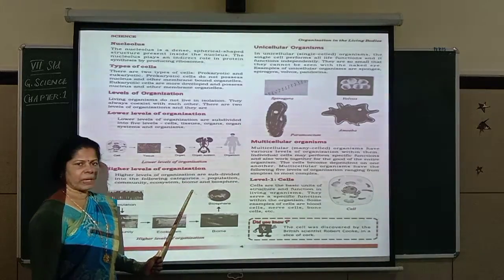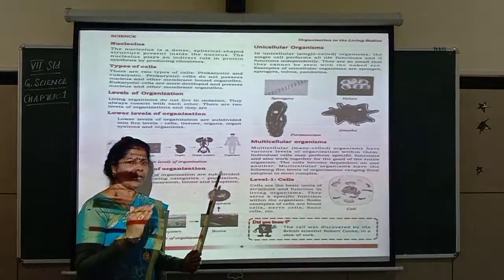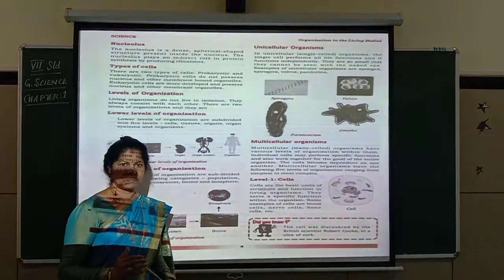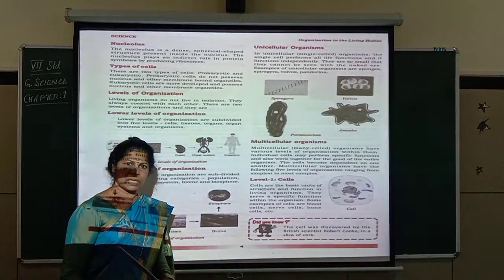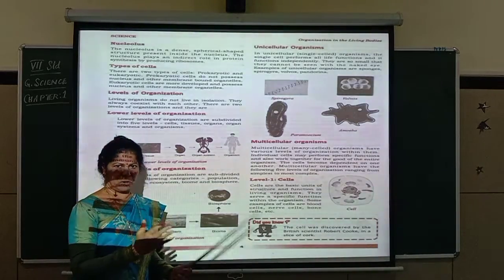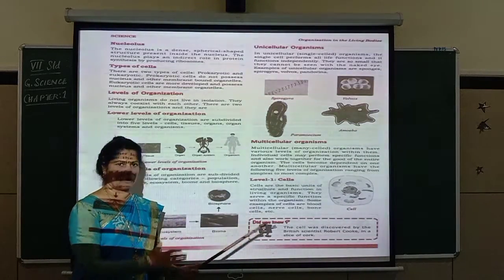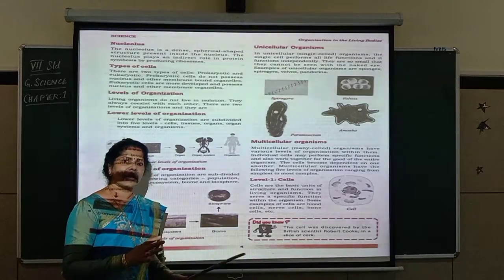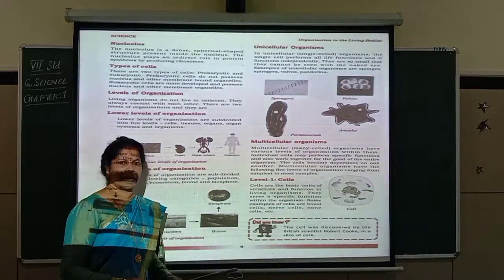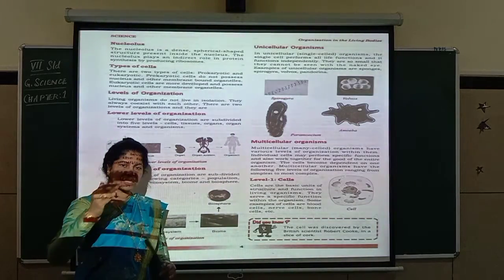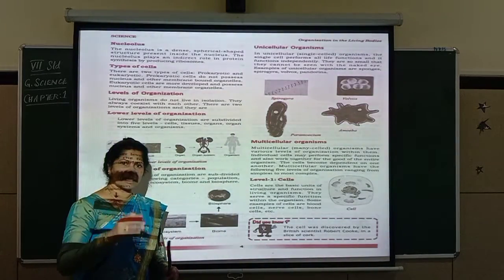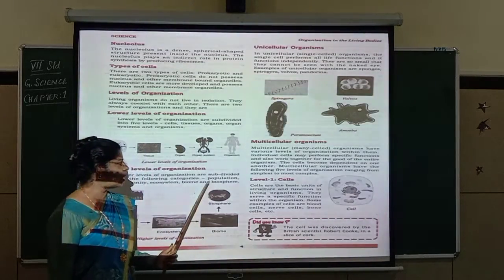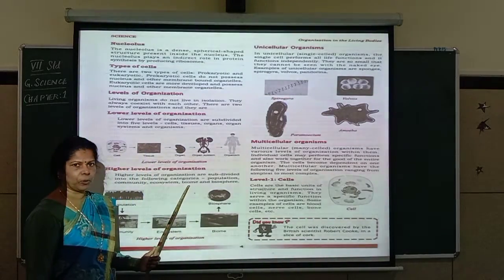Biome refers to the various divisions found in nature itself. For example, oceans are one type, deserts are one type, grasslands are one type. So in nature we have many such divisions — that is called biome.